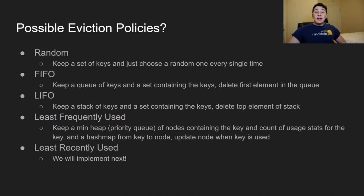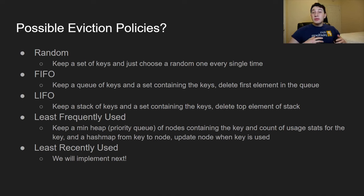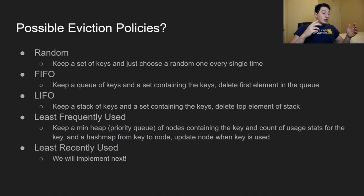What about eviction policies? We can evict keys randomly — keep a set of keys and use a random class to choose one each time. We could do FIFO based off a queue, deleting the first element. This would also need a HashMap pointing to nodes in the queue in case a key gets deleted from the middle. Same goes for LIFO using a stack, plus a HashMap pointing to stack nodes for mid-stack deletion.